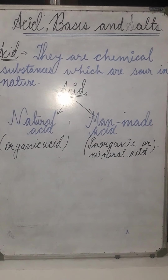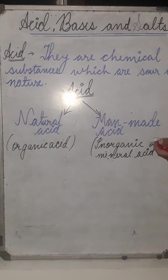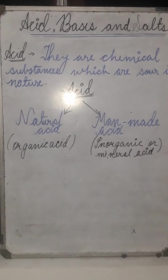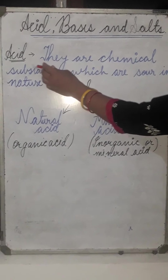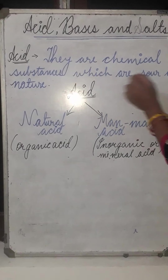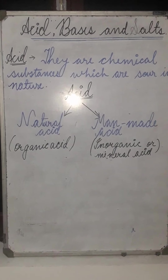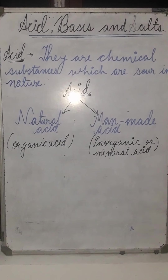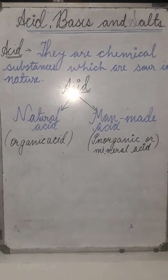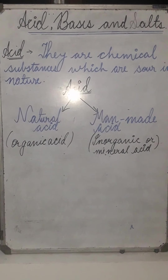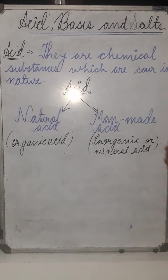When we think about acids, we think acid is something which burns our skin. This is true but it is not true for all acids. Now you should know the definition of acids — they are chemical substances which are sour in taste. You people have seen in your fridge, in your kitchen, lemon, oranges, tamarind or curd. All these contain acids.